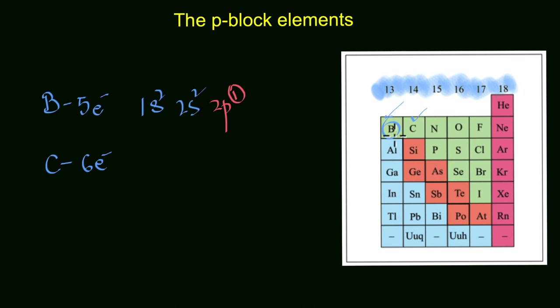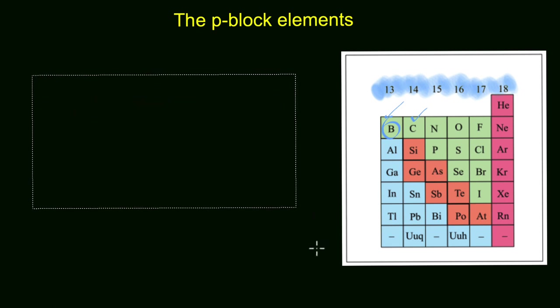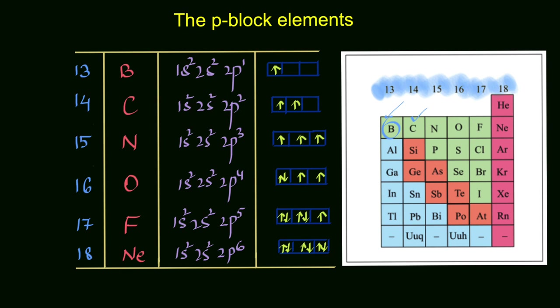If you look at the next element, which is carbon, it has six electrons. That means we have 1s² 2s² and two electrons in the p orbital. Similarly, if you look at the other elements in the p-block, you'll notice that the electrons enter successively into the p orbitals.